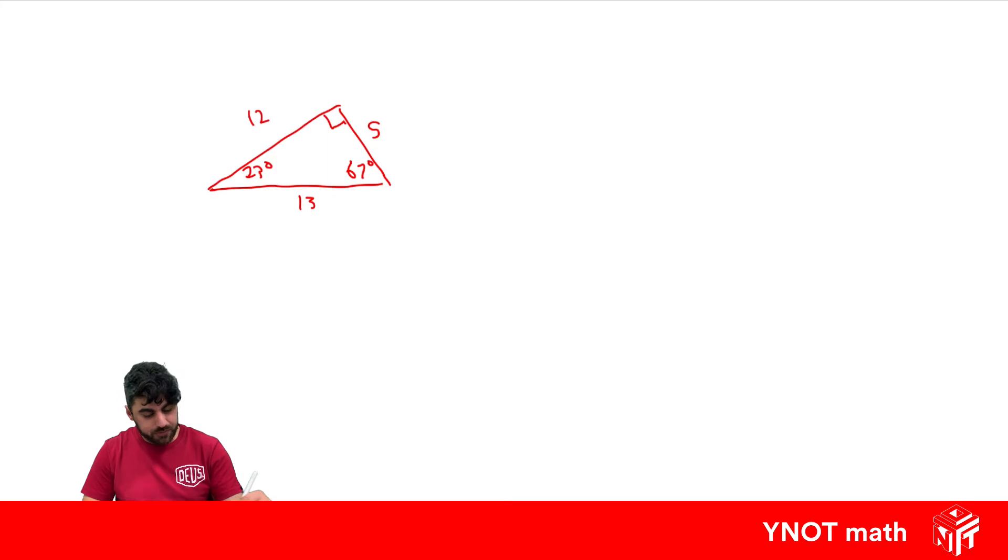And let's draw up a bigger triangle with the same angles. So 90, 67 degrees, 23 degrees, and let's multiply every side here by 2. So we get 12 times 2 is 24, 5 times 2 is 10 and 13 times 2 is 26.